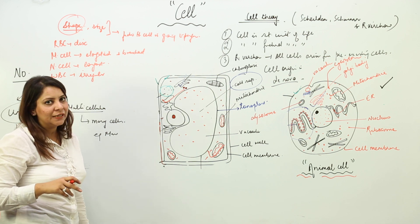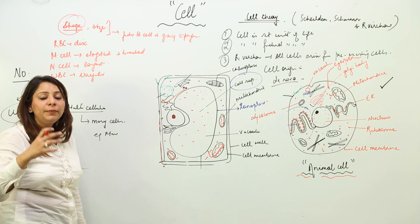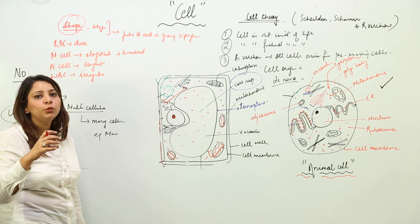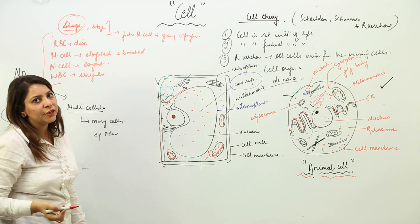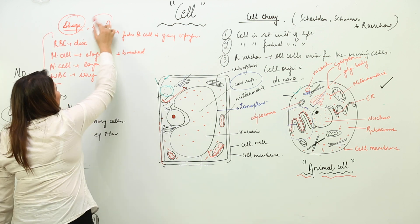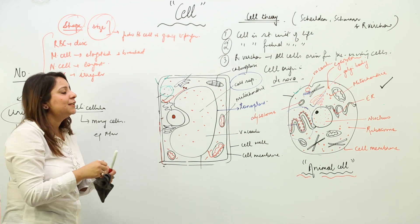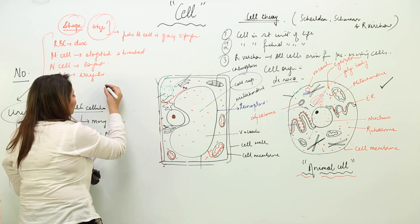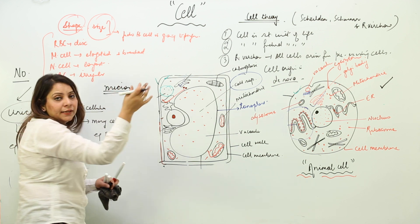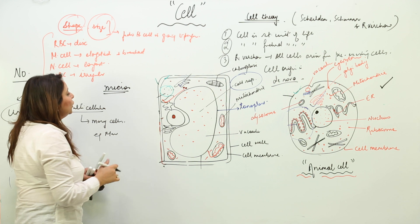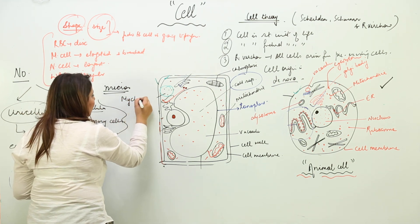We have WBC which is irregular in shape. Why? Because its function is to eat up the foreign substances and for that it needs to move out from the vessel. If it is irregular in shape, then only it is able to escape out. So cells can have different shapes depending upon size. We start measuring the size of the cell in unit micron.